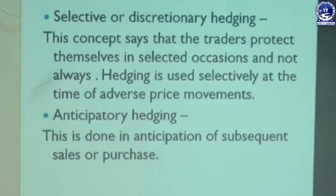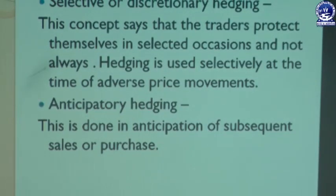Next is anticipatory hedging, which is done in anticipation of a subsequent sale or purchase. For example, a farmer expecting a yield anticipates a fall in price and goes for selling that particular commodity in anticipation of that fall. Similarly, a manufacturer or miller who needs pulses goes for buying that commodity in anticipation of a price hike. Here there is anticipation of a future loss which is covered by the hedge position. These are the multi-purpose hedging types put forward by Working.